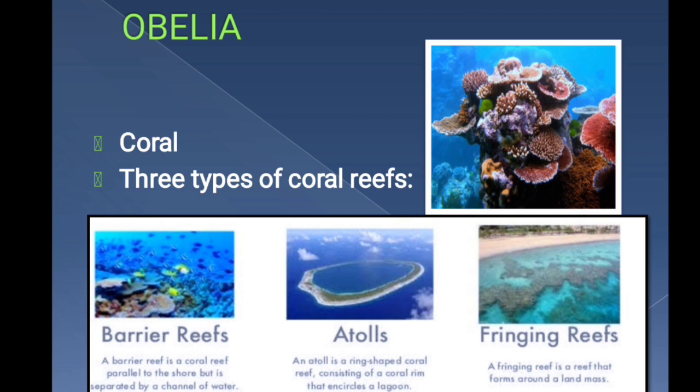Some Cnidarians secrete an exoskeleton made of calcium carbonate. Once the animal dies, the skeleton remains, and this skeleton is known as coral. Such Cnidarians are known as corals. When these corals form extensive masses, they form coral reefs, of which there are three types: barrier reefs, atolls, and fringing reefs.